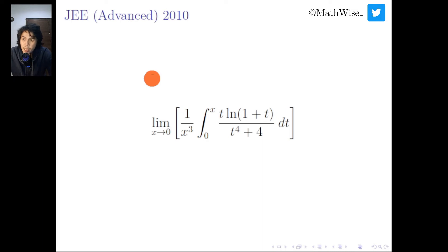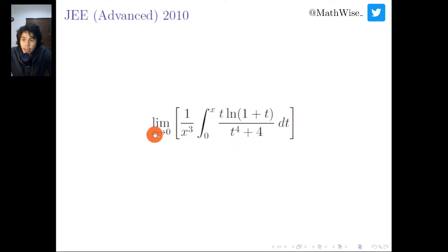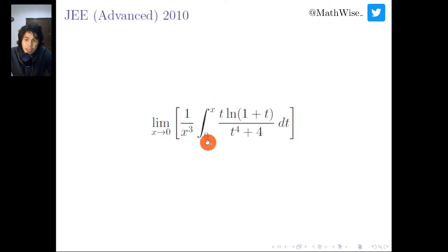This is a problem from the JEE Advanced exam 2010. We must compute this limit as x approaches 0 of 1 over x cubed times the integral from 0 to x of t times ln(1+t) over t to the power of 4 plus 4.